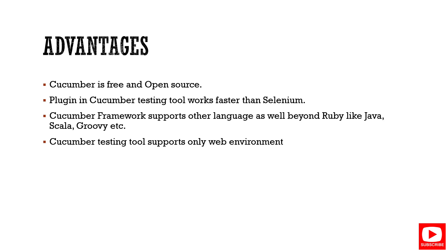Some advantages of Cucumber: it is free and open source, similar to Selenium. Plugins in Cucumber run faster compared to plugins in Selenium, so there is a time-of-execution advantage. The Cucumber framework supports languages beyond Ruby — including Java, Scala, and Groovy. Currently it supports web applications, and may support other platforms in the future.